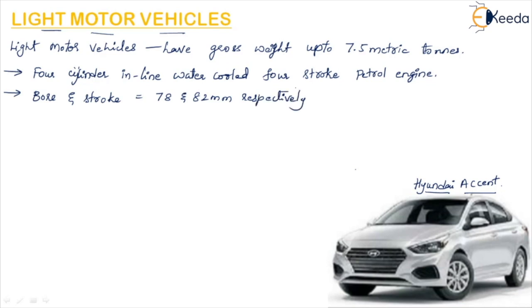Bore is the diameter of the cylinder — there is a cylinder in which the piston moves, and the diameter of that cylinder is called the bore. Stroke is the distance within the cylinder which the piston travels — as the piston moves up and down, that distance is called the stroke.